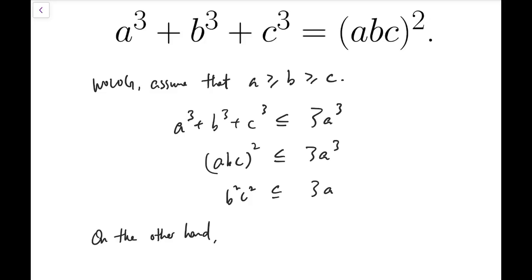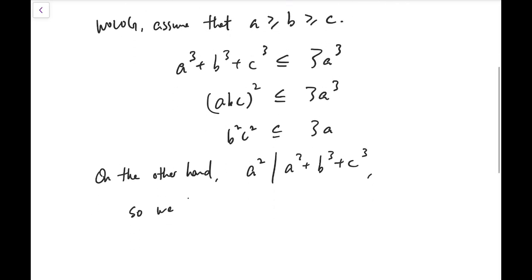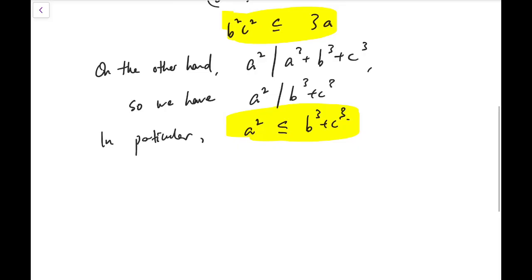Now on the other hand, we have a squared dividing the sum of cubes. And of course, a squared divides a cubed individually, so we have a squared divides b cubed plus c cubed, and in particular, because I'm looking for bounds here, I'm going to write a squared is less than or equal to b cubed plus c cubed.